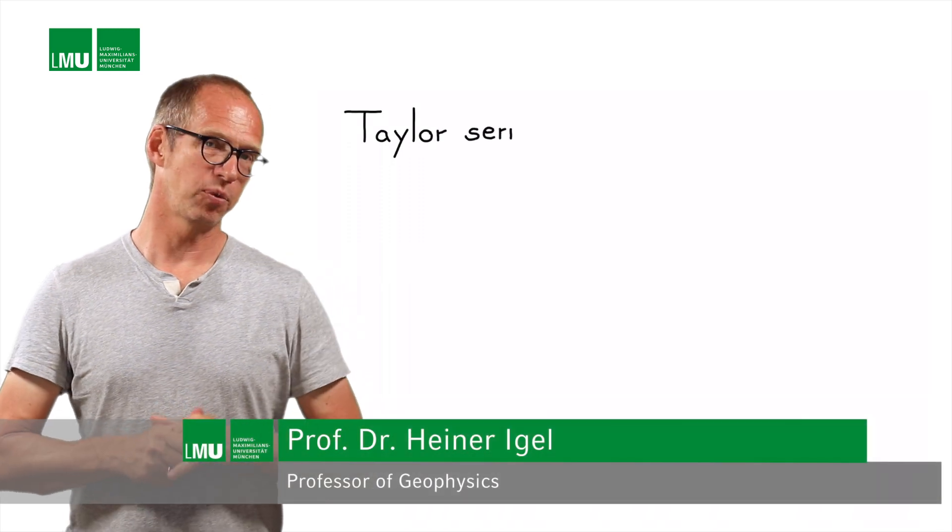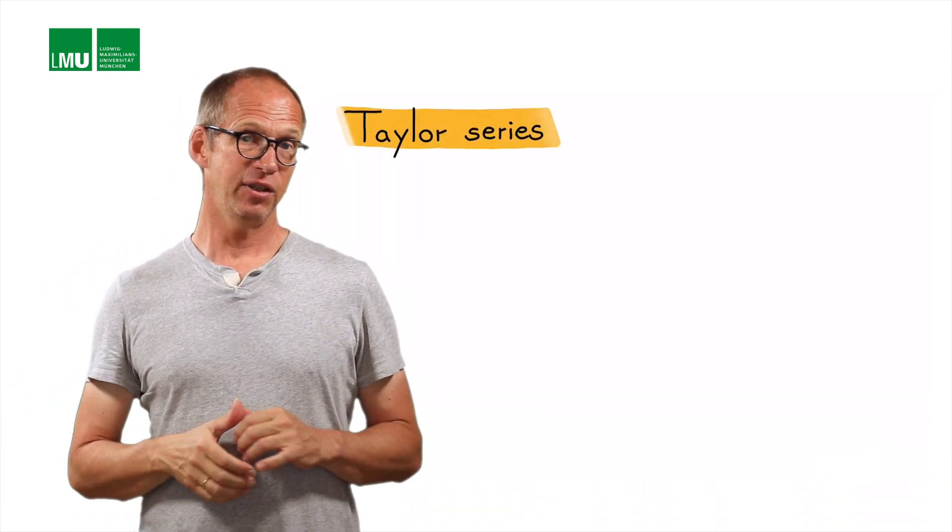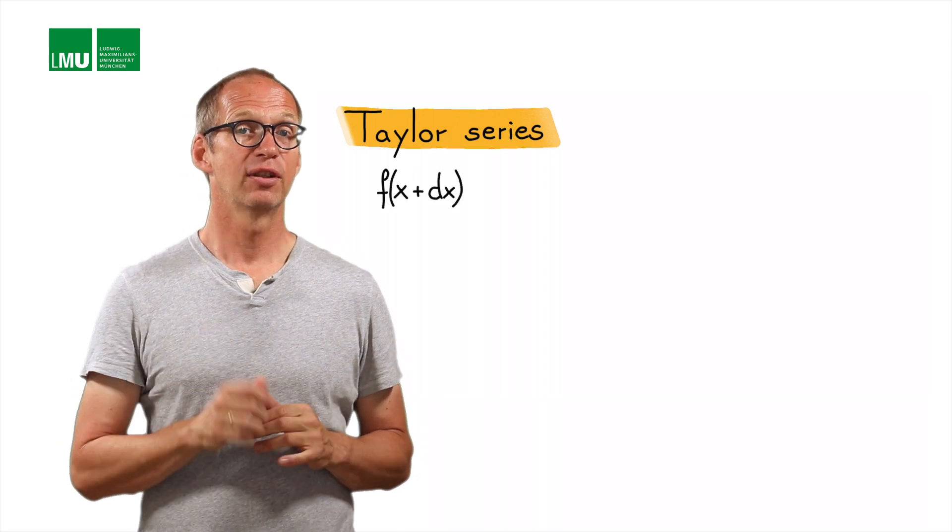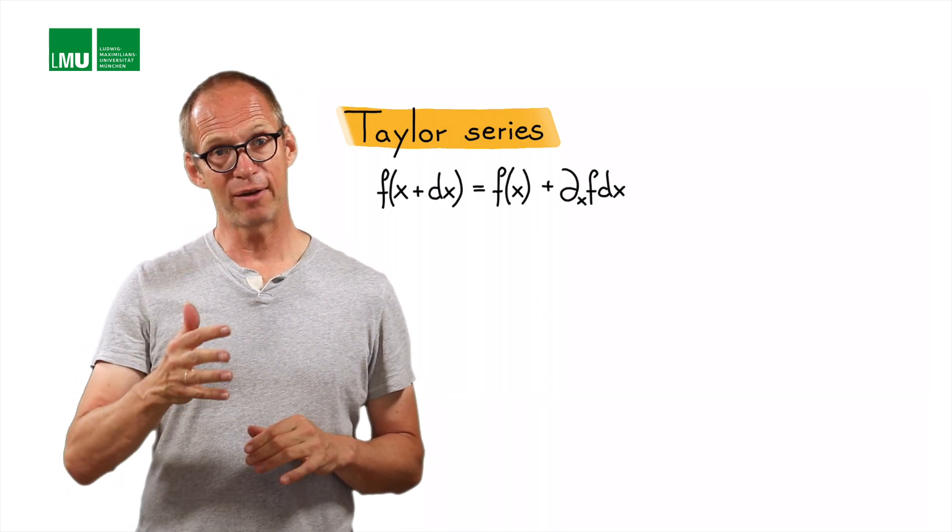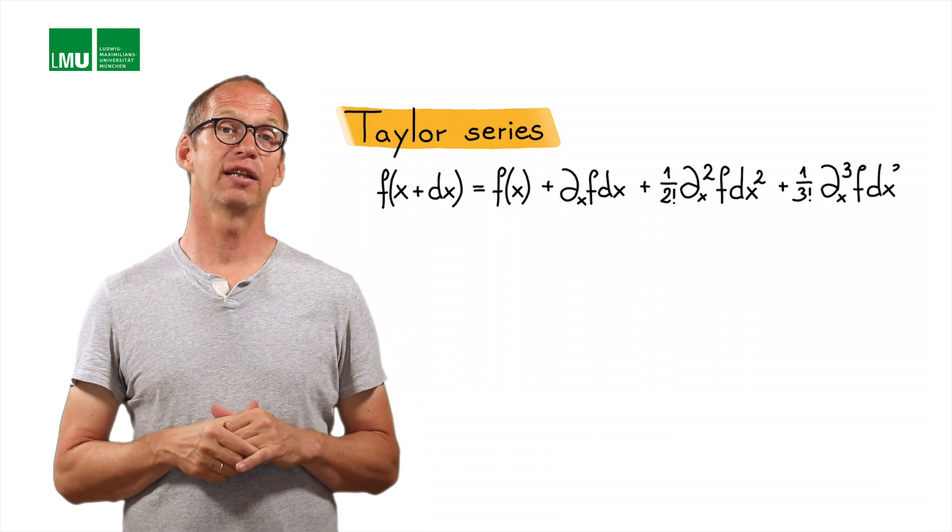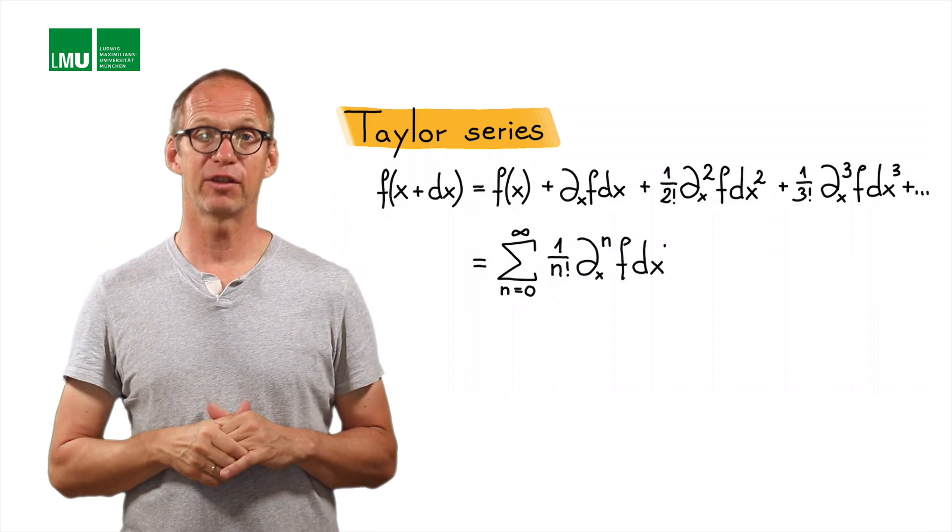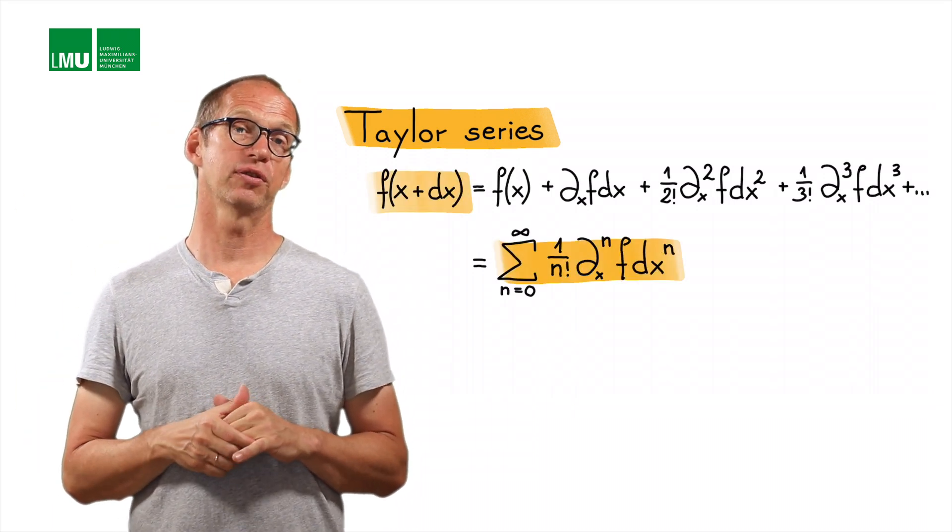Taylor theory is our way of approximating a function around a central point x. Here you see the definition: f of x plus dx is equal to f of x plus some polynomials in dx containing the first, second, third derivative and another term containing the factorials.